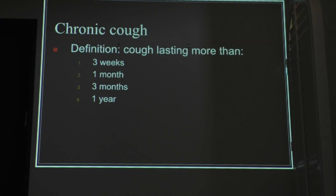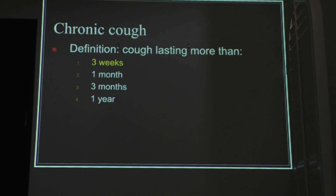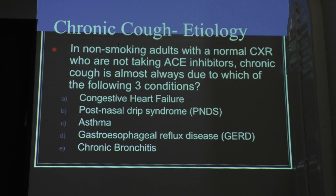So, chronic cough — what do you guys think the definition is? Very good. When we talk about chronic pain, I think it's three months. But for cough it's three weeks. This is important because for some diseases like TB, there is a cut-off criteria: if you're coughing for more than three weeks, you need to do additional workup. So in non-smoking adults with a normal chest x-ray who are not taking an ACE inhibitor, chronic cough is always due to which three conditions?